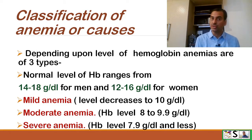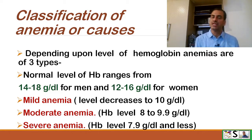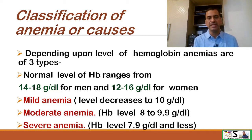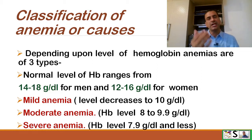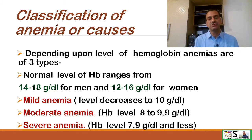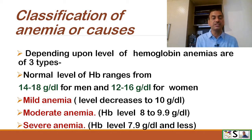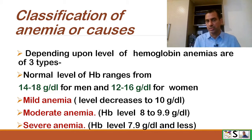Depending upon the level of hemoglobin, anemias are again classified into three types. Normal hemoglobin ranges from 14 to 18 gram per deciliter of blood in men and 12 to 16 gram per deciliter for women. Below this range there is anemia. Mild anemia is when the level decreases to 10 gram per deciliter — that is 10 to 14 gram for men and 10 to 12 gram for women.